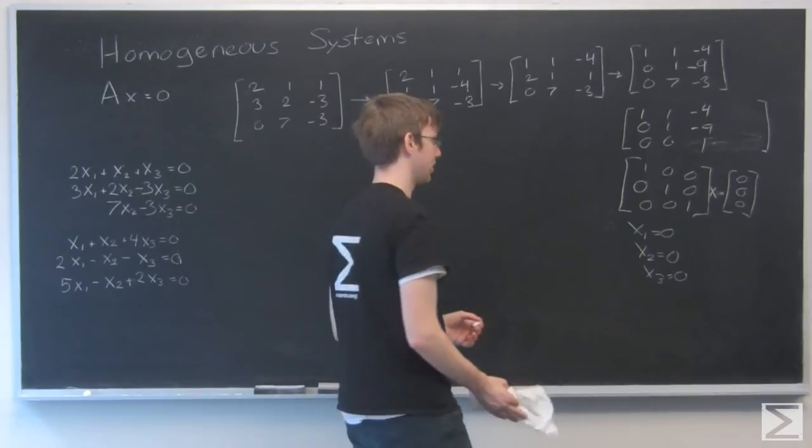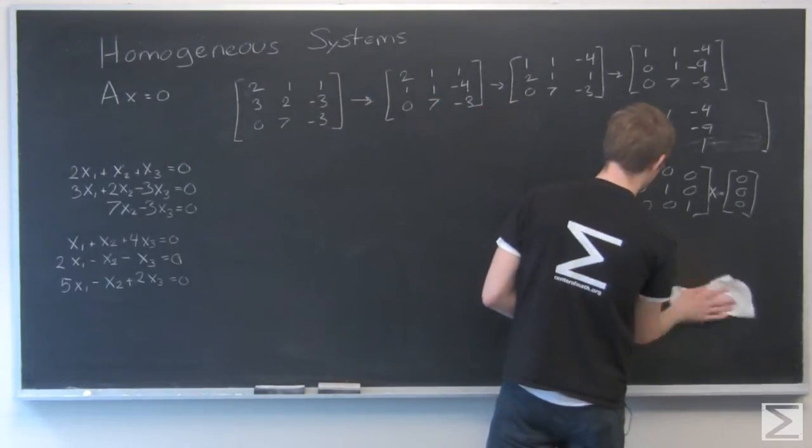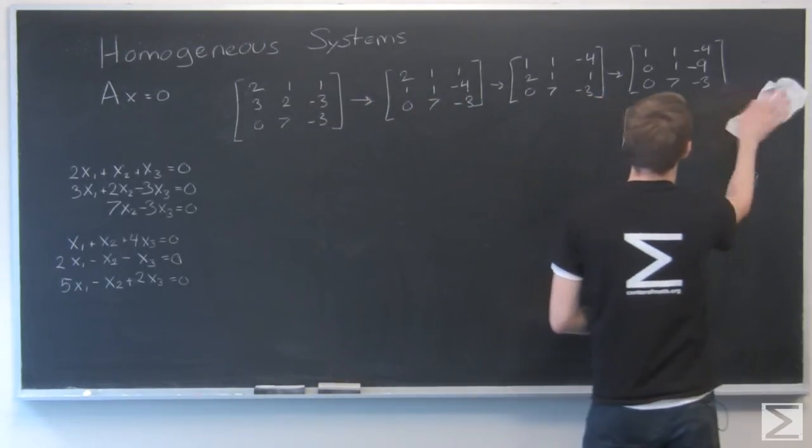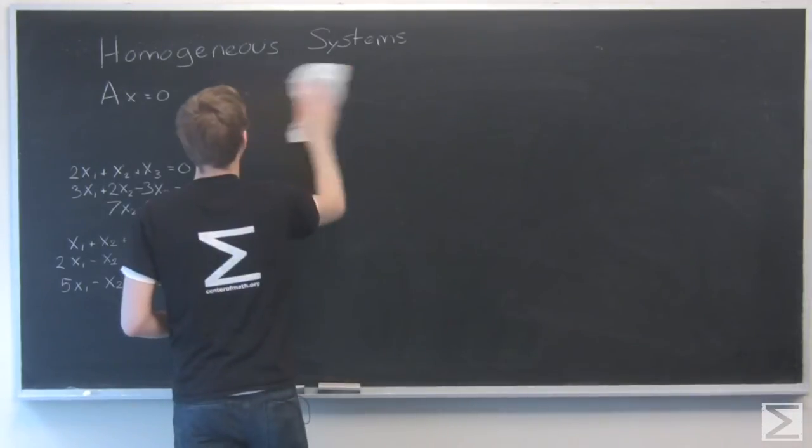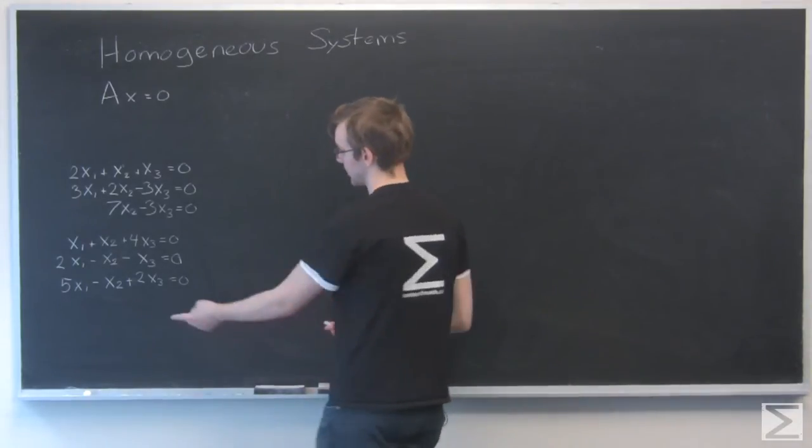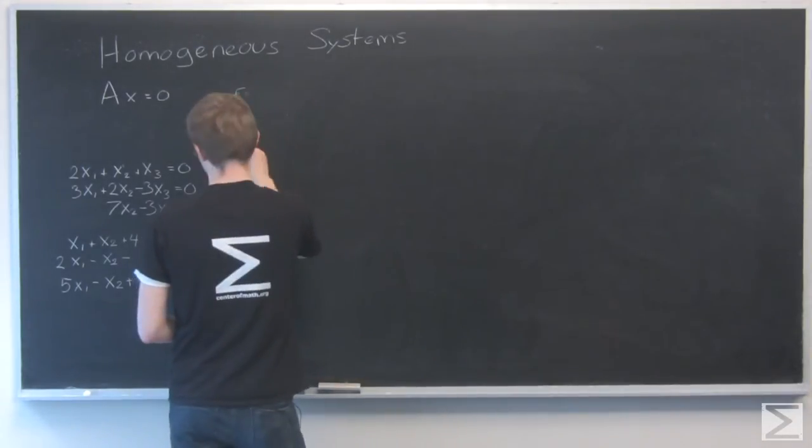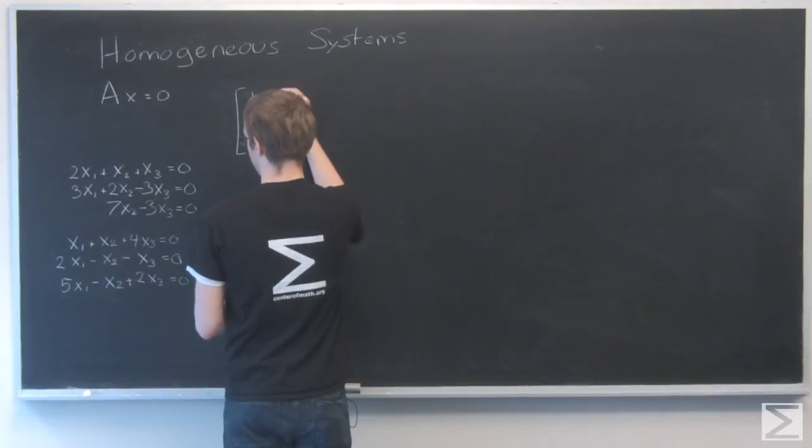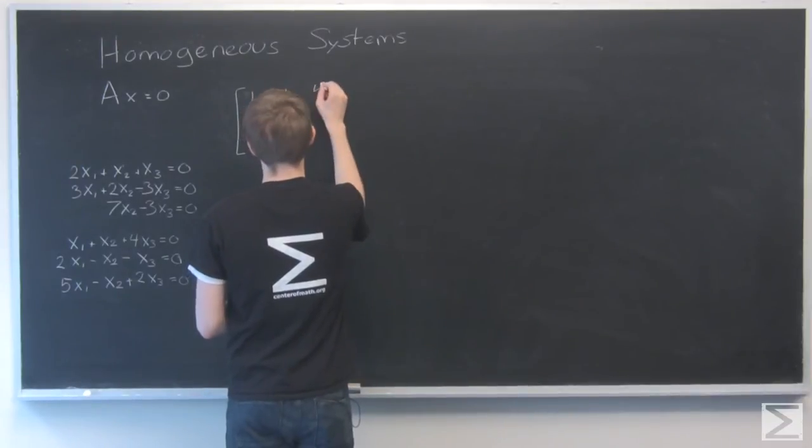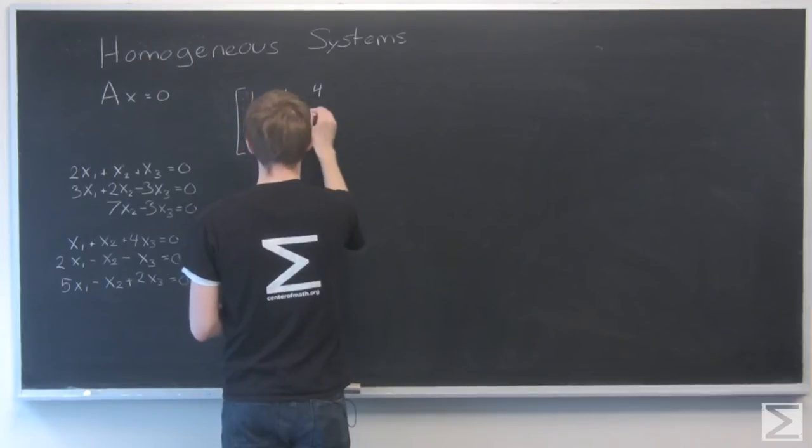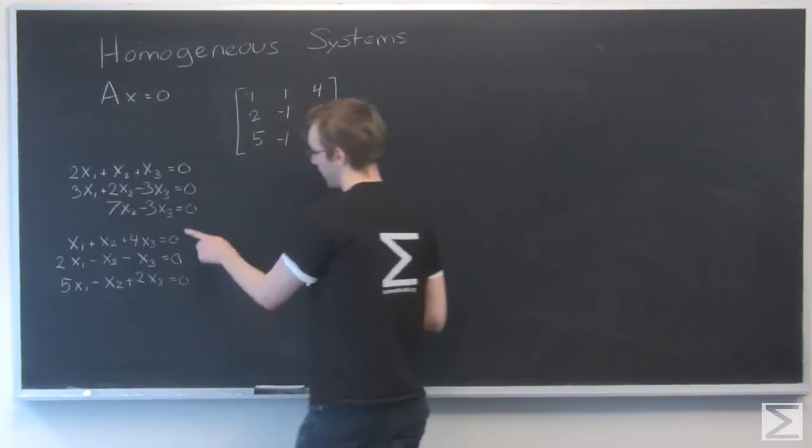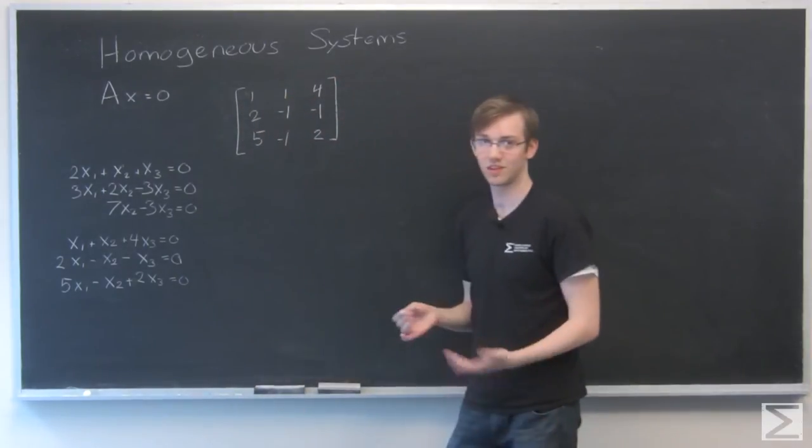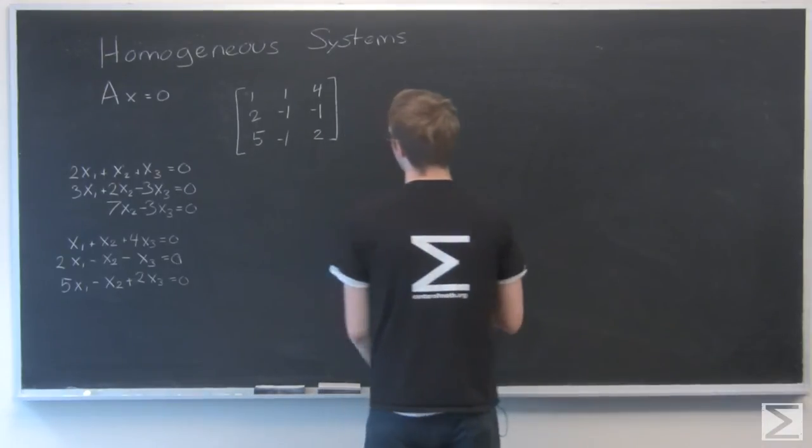Now what does an example look like that has more than the trivial solution? Let's write this one as a matrix. I have 1, 1, 4, 2, minus 1, minus 1, 1, 2, and again, I don't have to write those zeros because they don't change. I just have to remember that they're there.